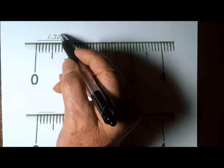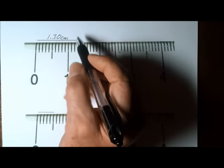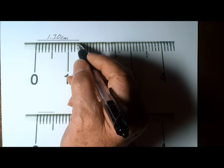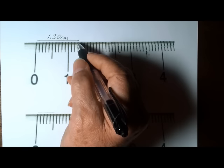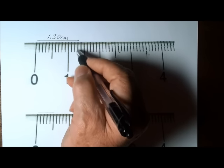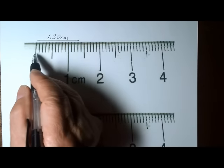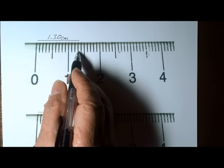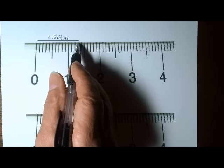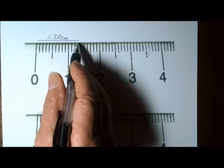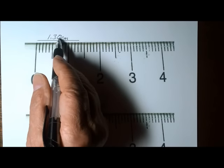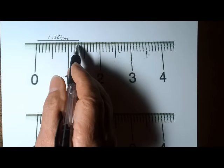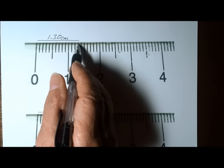That last place is the estimated position of the end of this line relative to that three millimeter mark right there. So this line is 1.30 centimeters. That zero represents the error at the end of this line.